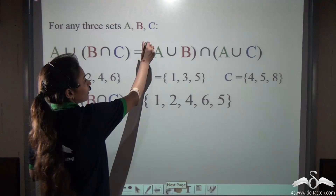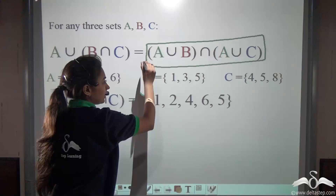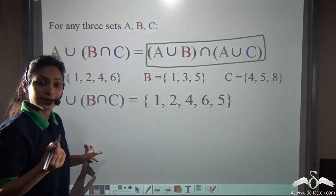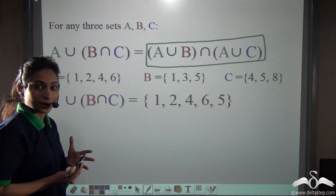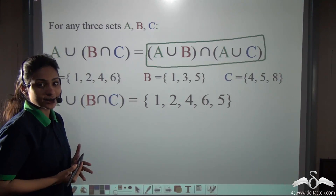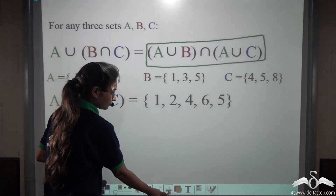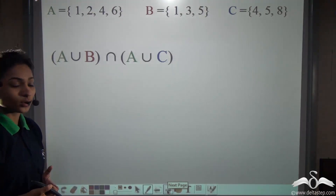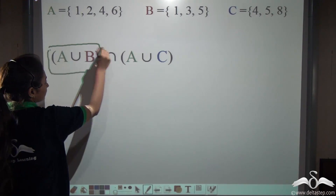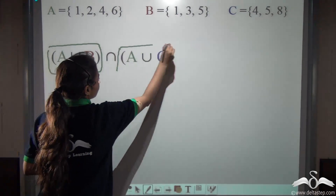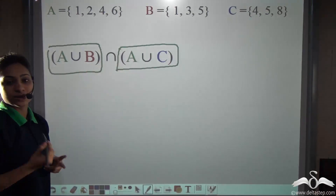Now we will prove the right hand side part and see if we get the same answer. According to the Venn diagram we did, we should get the same answer. First, what will we do? We will find out the brackets — A union B and A union C.